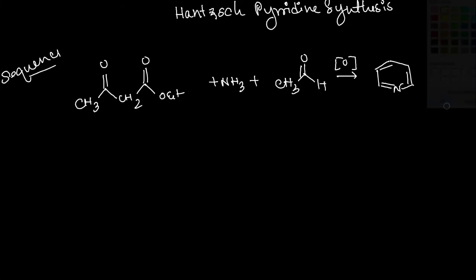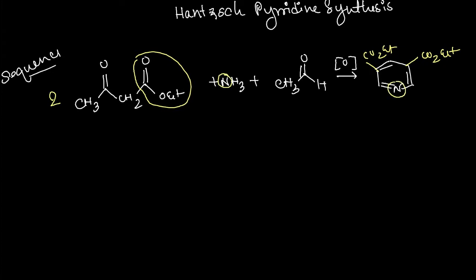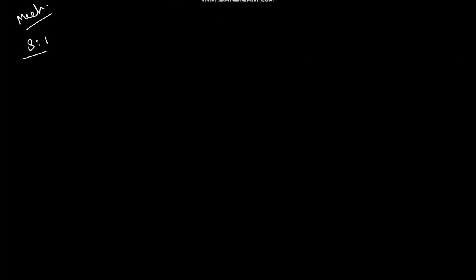Now let's see how to assign the substitution pattern. First, the CO2Et group will come here, and here also CO2Et, because two molecules of ethyl acetoacetate are needed. From ammonia we get the nitrogen, and the CH3 group of acetaldehyde will come here.